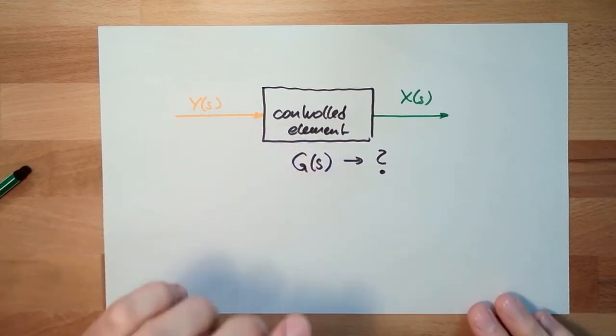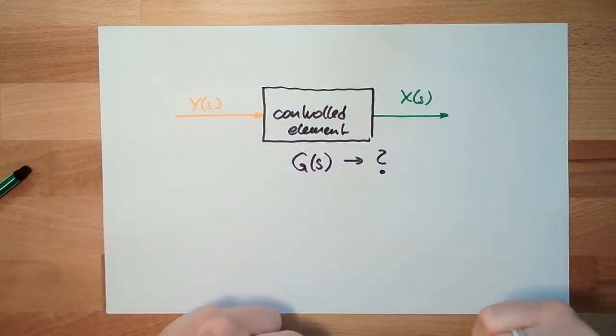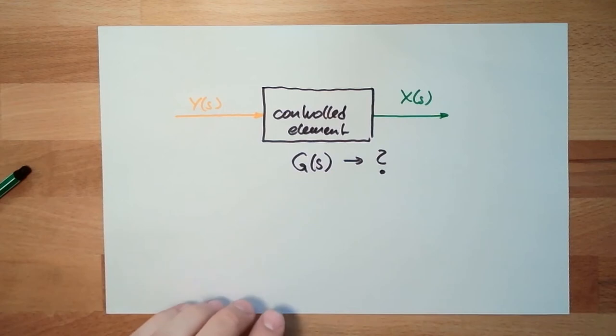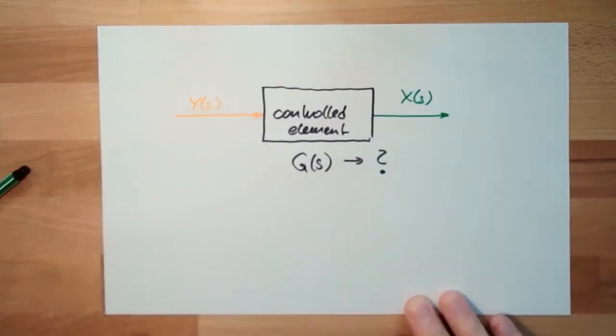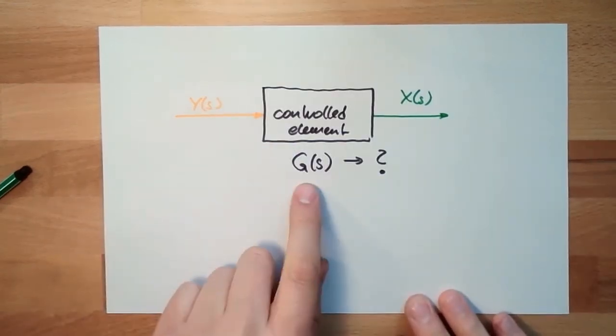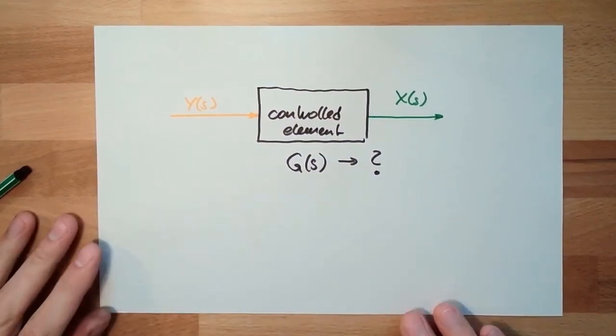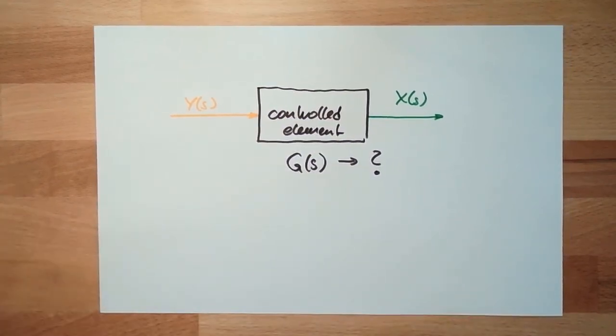However, there are some standard elements. During the next videos we will get to know them. There are some standard elements which we can use as substitution for this control element. Why am I not using this transfer function of this real control element? Because reality is much too complicated.